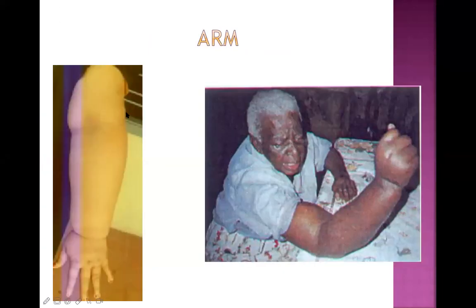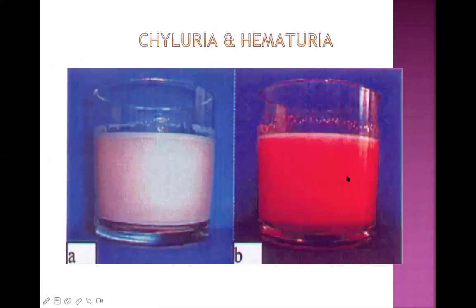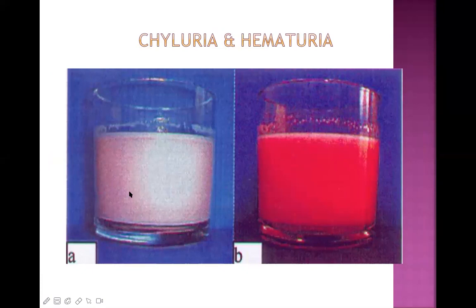The arm can be similarly affected - swollen and massively enlarged due to involvement of the lymph nodes and lymphatic channel. Two urine samples are shown: one milky white in color (chyluria) and one red in color (hematuria), illustrating a clear difference. Chyluria can be seen in patients from endemic areas with filariasis.